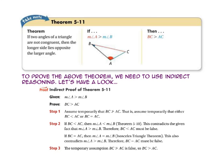For theorem 5-11, if two angles of a triangle are not congruent, then the longer side lies opposite the larger angle. So if the measure of angle A is greater than the measure of angle B, then side BC will be longer than side AC. In order to prove this theorem, we need to use indirect reasoning. Take a minute to look over the proof of theorem 5-11.